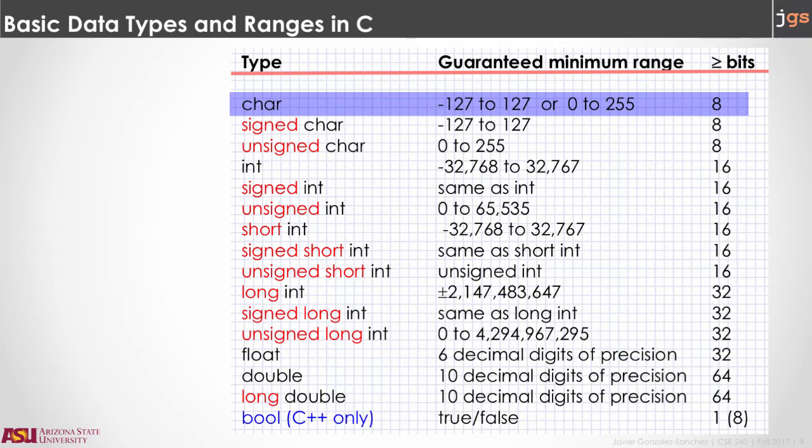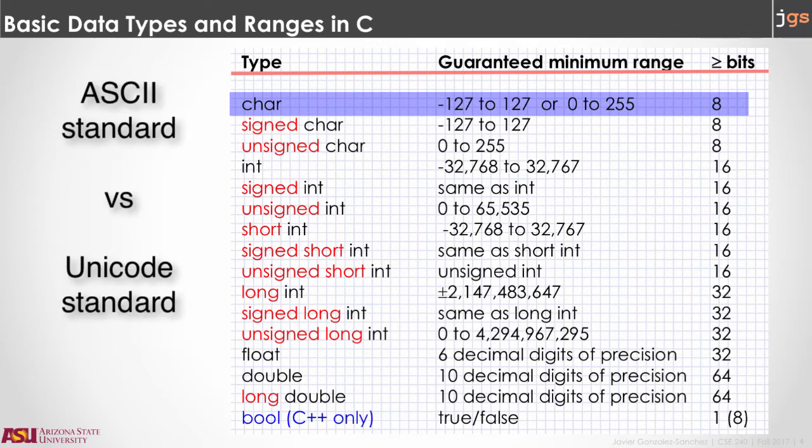You can notice that the characters, the size is one byte, eight bits, and that is because C uses characters in ASCII instead of using Unicode like Java. In Java, because we use Unicode, the characters are two bytes or 16 bits.